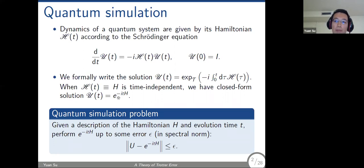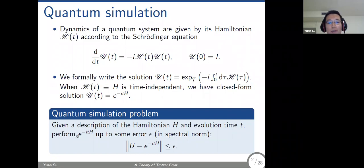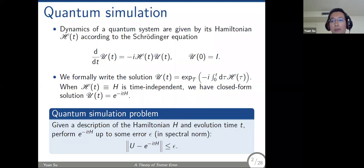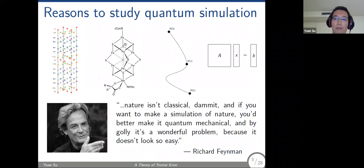The problem of quantum simulation is: given a time-independent Hamiltonian and evolution time t, you want to perform e to the minus iHt up to some error epsilon. This seems straightforward — just exponentiate a matrix — but it is quite difficult for a classical computer when the dimensionality is large. On the other hand, solutions to this problem could potentially be applied to studying chemical reactions, material science, and also to designing other quantum algorithms such as adiabatic evolution.